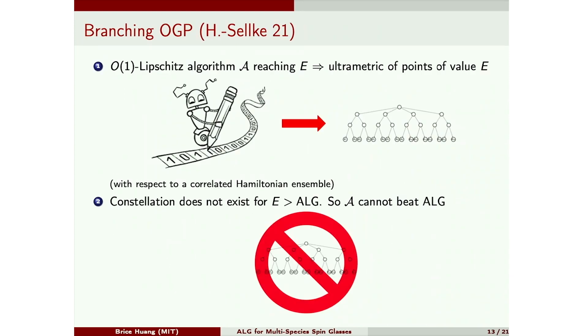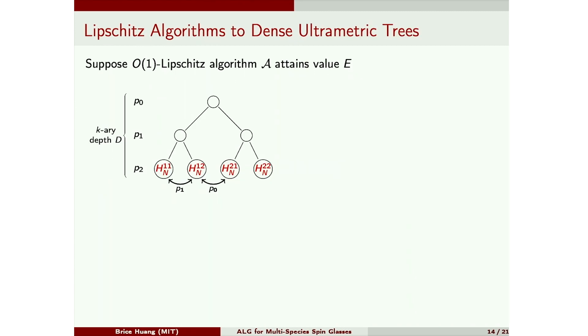And we're going to argue, on the one hand, that if a Lipschitz algorithm attains value E, then it can be used to build an ultrametric of points with this value, with respect to a correlated Hamiltonian ensemble that I'll introduce in a second. And on the other hand, that such a constellation does not exist with value more than alg. And together, these imply that Lipschitz algorithms can't surpass alg.